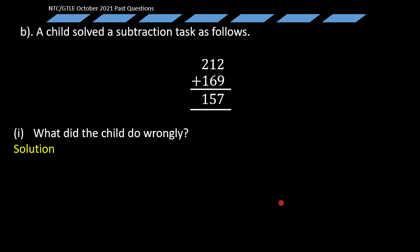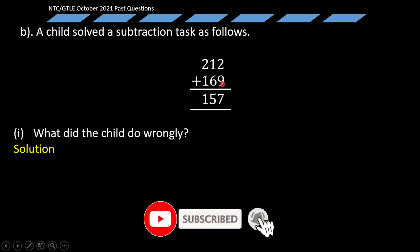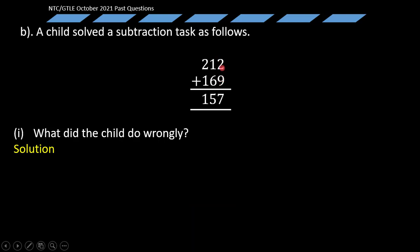Now let's look at the solution. If you observe in the solution, the child subtracted the bigger digit from the smaller digit regardless of the order of subtraction. For instance, at this place the child subtracted 2 from 9 instead of 2 minus 9, which would have required that you borrow 1 from this side making it 12 before subtracting. The child didn't do that. Now in the second part you get to realize that the child also subtracted 1 from 6, and the last one, 1 from 2, which is actually wrong.